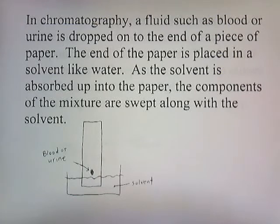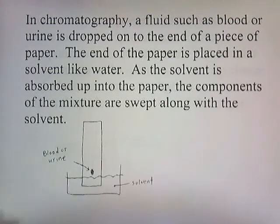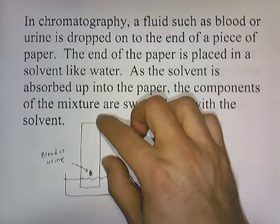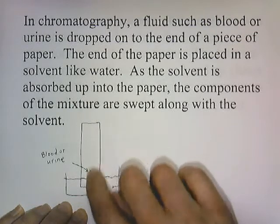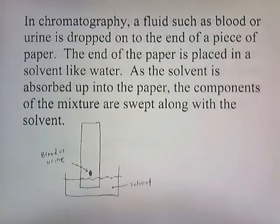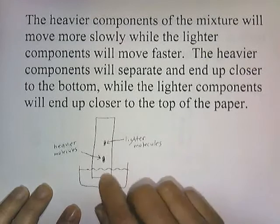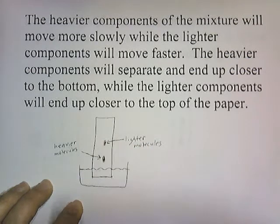Chromatography is another example of gravitational separation. A fluid such as blood or urine is dropped onto the end of a piece of paper, and the paper is placed in a solvent like water. As the solvent is absorbed up into the paper, it sweeps the components of the mixture along with it. This is used in drug testing — a few drops of urine are placed at the bottom of a paper strip, the solvent separates the components, and any drugs present appear at a characteristic location. Heavier components move slowly and stay near the bottom, while lighter components move faster and end up near the top.